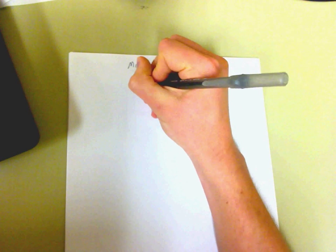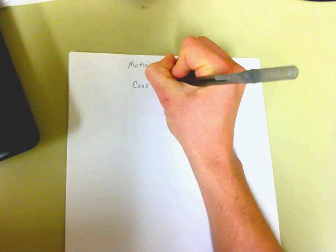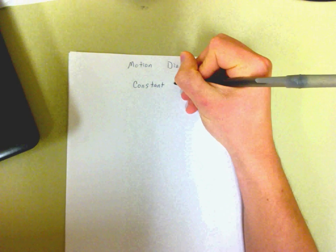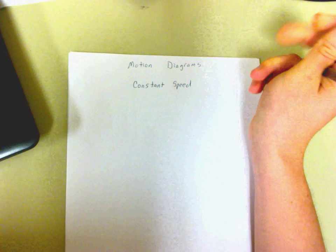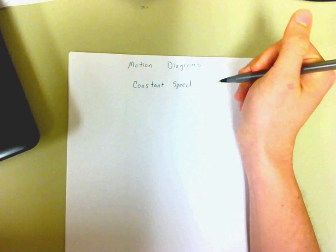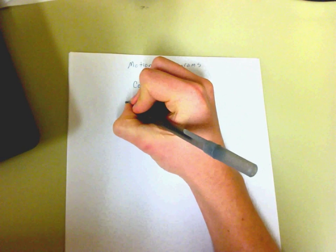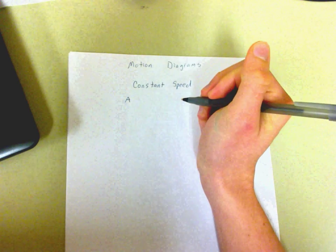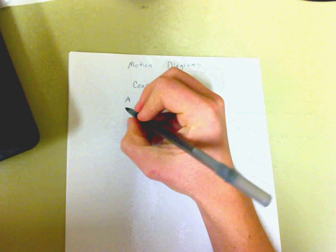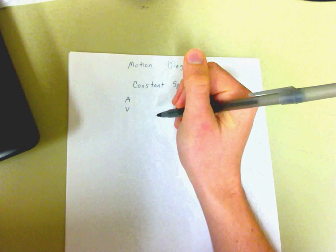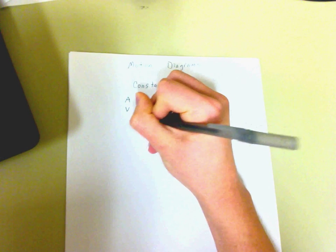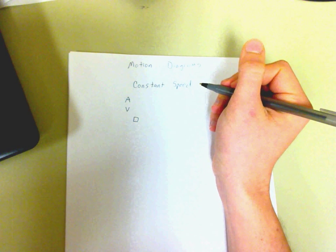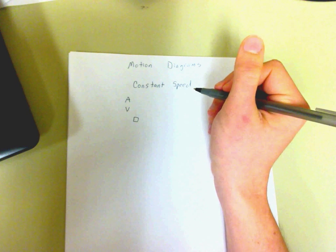So the first one I want to draw is a constant speed. Remember that constant speed does not have an acceleration. Every motion diagram will always have a spot for acceleration — A stands for acceleration — and V stands for velocity. And then you need your box or your object. I draw boxes for my objects, but you can use dots if you prefer.